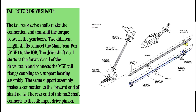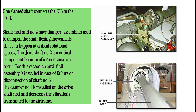Tail rotor drive shafts. The tail rotor drive shafts make the connection and transmit the torque between the gearboxes. Two different length shafts connect the main gearbox (MGB) to the IGB. Drive shaft number one starts at the forward end of the drive train and connects the MGB tail flange coupling to a support bearing assembly. That same support assembly makes a connection to the forward end of shaft number two, whose rear end connects to the IGB input drive pinion. One slanted shaft connects the IGB to the TGB. Shafts number one and number two have damper assemblies used to dampen shaft flexing movements that can occur at critical rotational speeds.